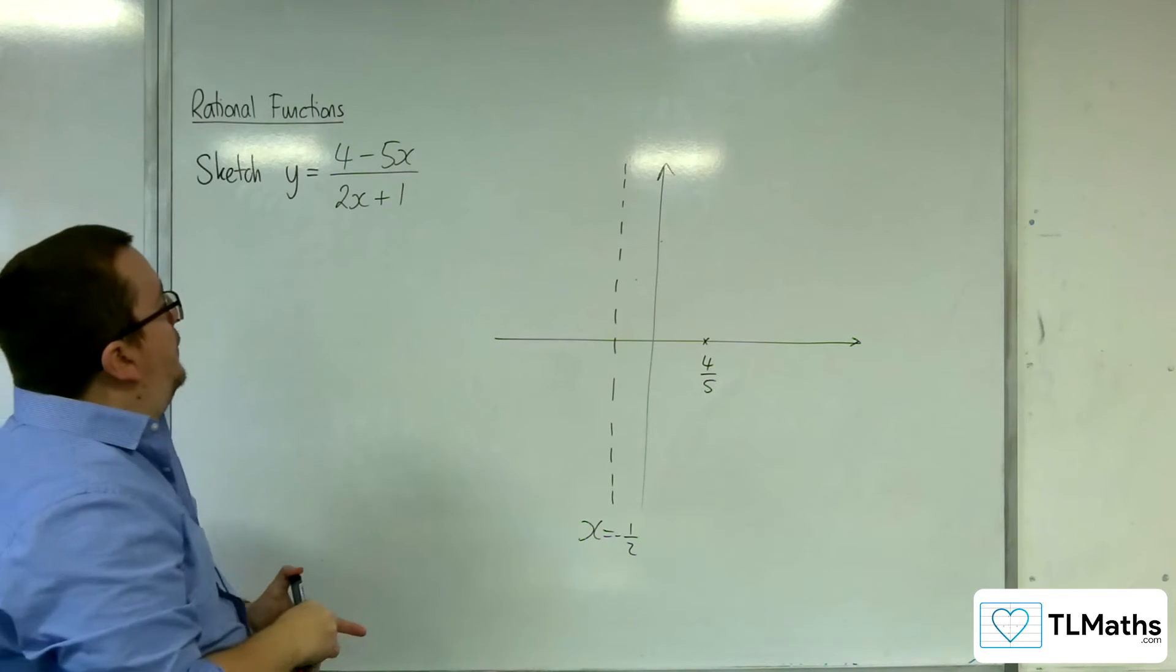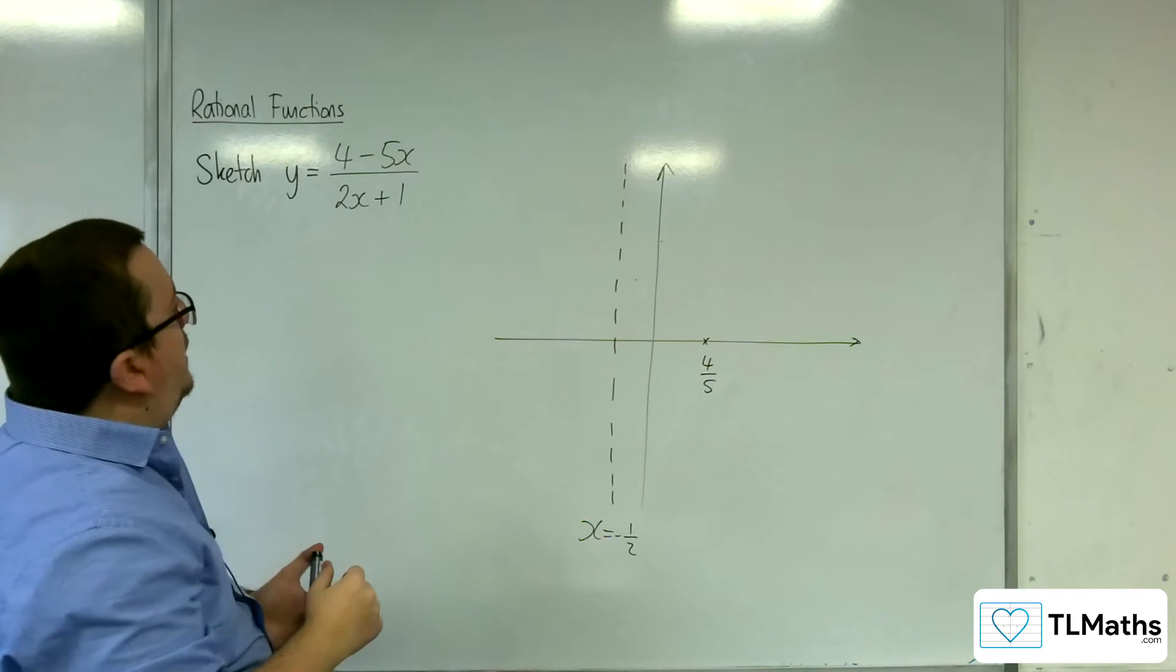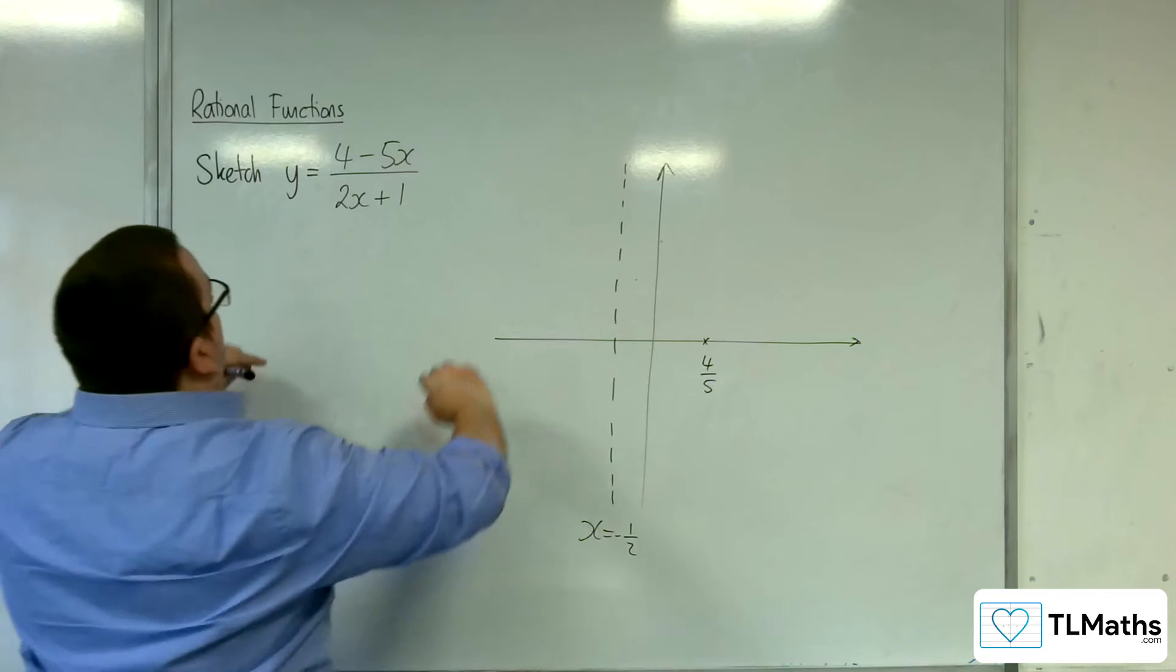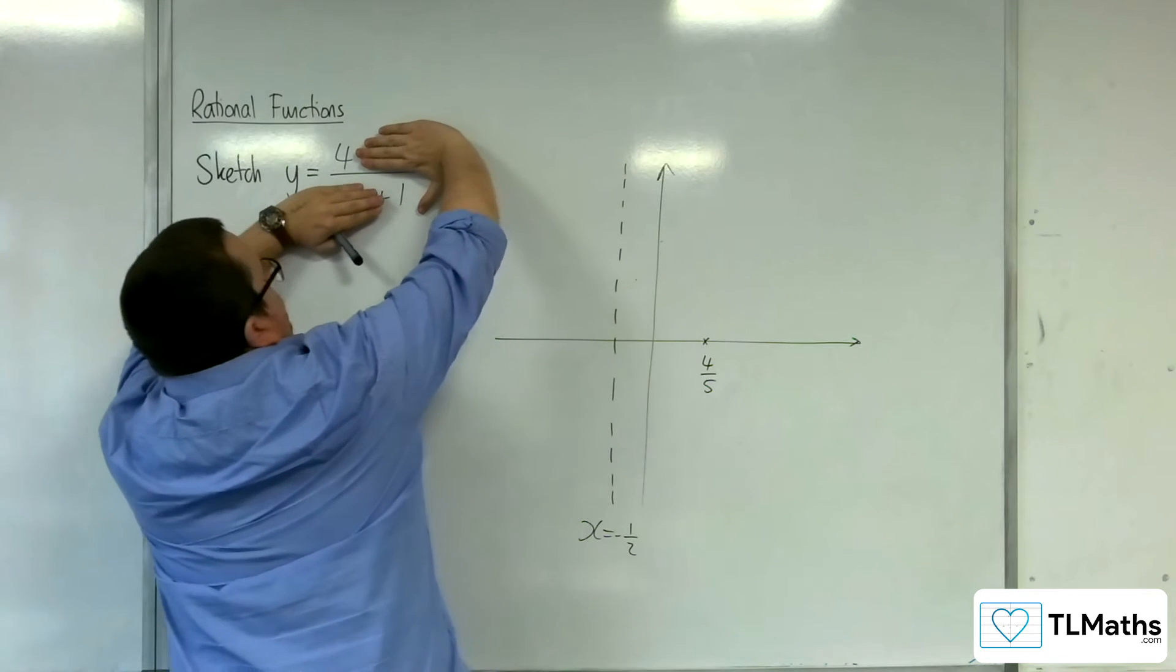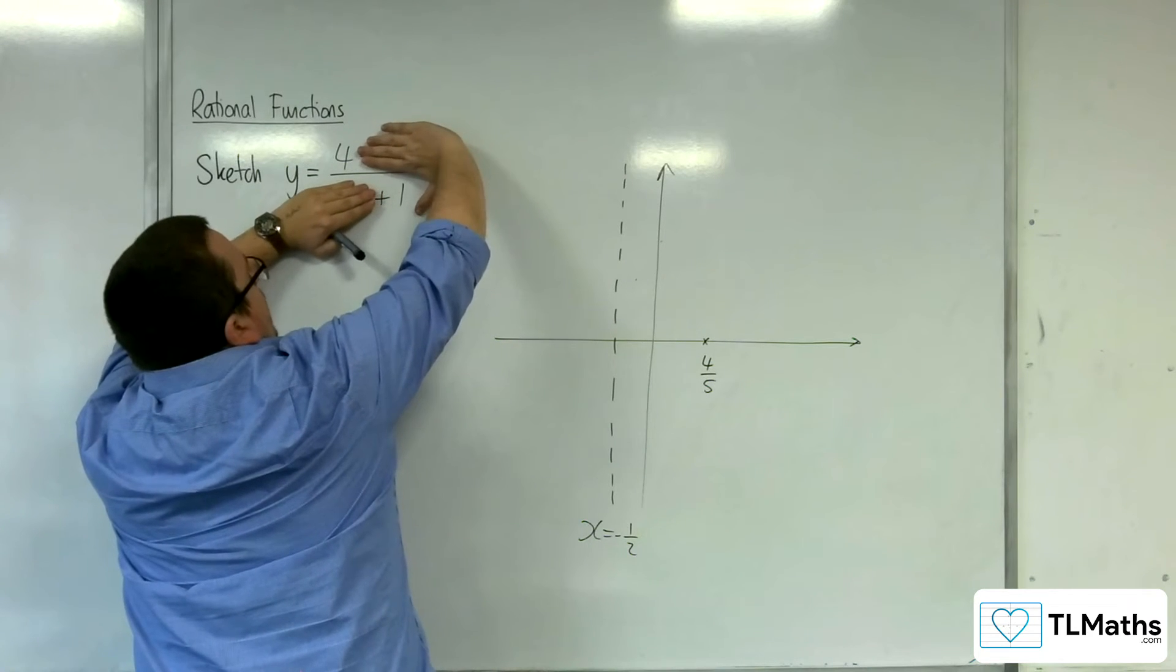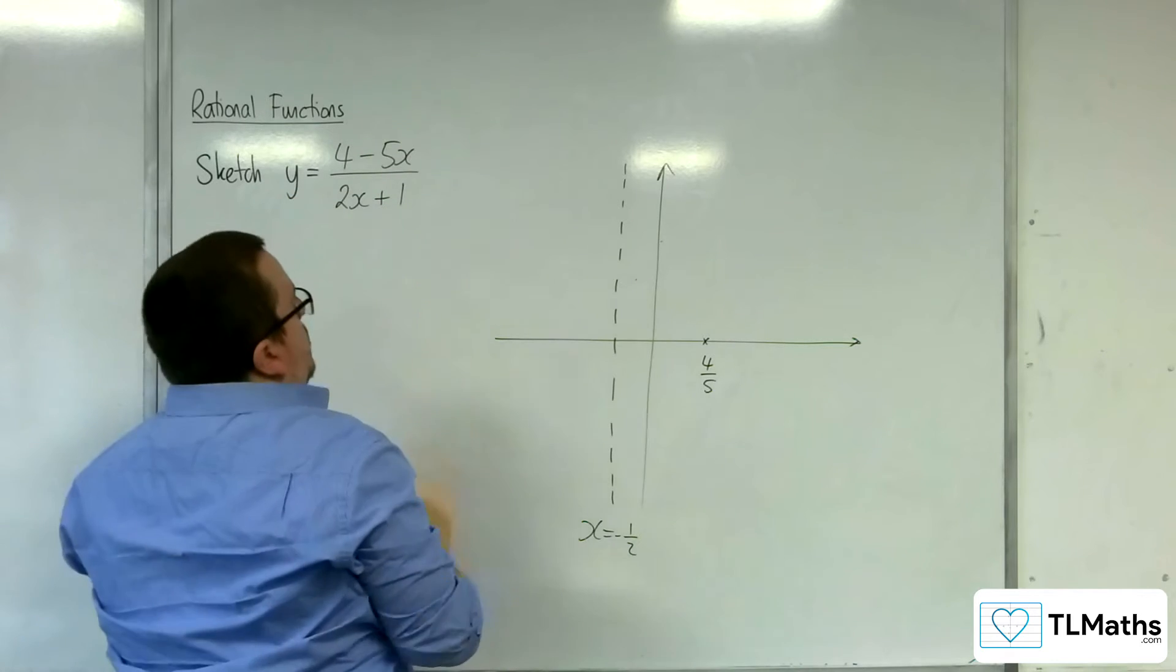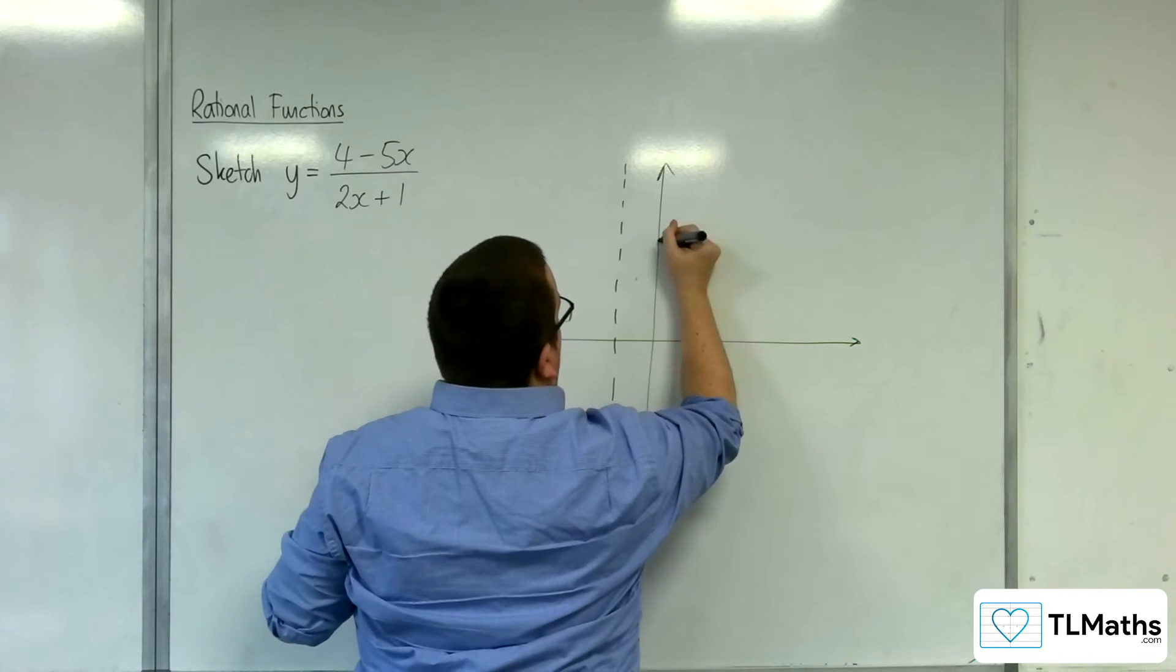Now where is it crossing the y-axis? That's going to be when x is 0. So when x is 0, we're going to get 4 over 1. So y equals 4. So somewhere up here.